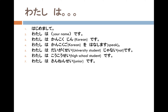Watashi wa sannensei desu — I'm a junior. Douzo yoroshiku onegaishimasu — pleased to meet you. Please write a few sentences about yourself: your nationality, the language you speak, whether you're a university or high school student, try to make a negative sentence, which school year you are, and end with douzo yoroshiku onegaishimasu.